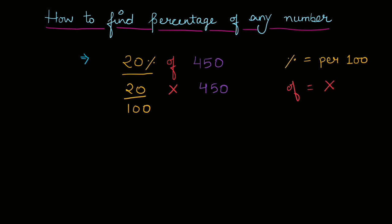Toh numerator mein, yahan pe ek zero hai 20 ke saath, usko maine cut kar diya denominator ke ek zero ke saath. 450 mein ek zero hai, isko maine cut kar diya hundred ke ek aur zero ke saath. Toh jo finally mere paas kya bacha hai, woh main niche likh leti hai.